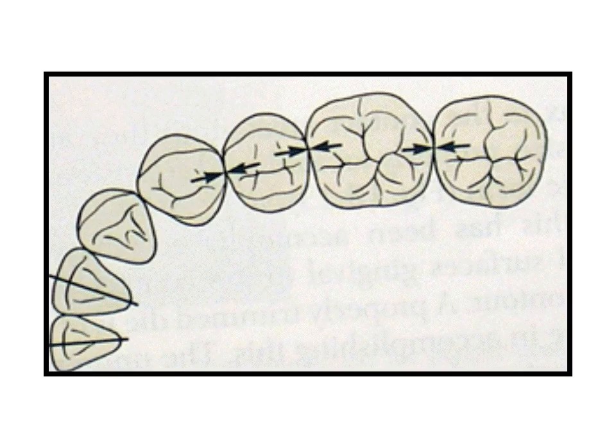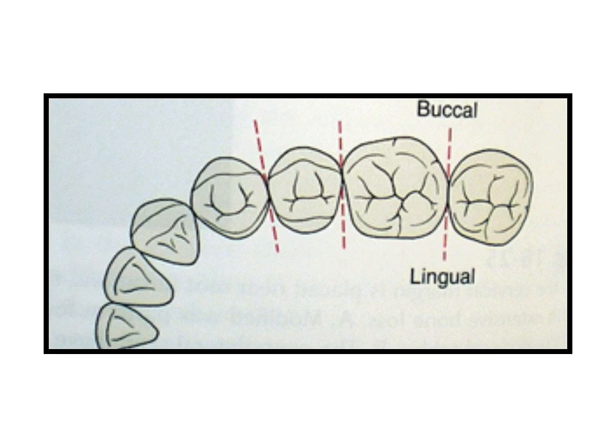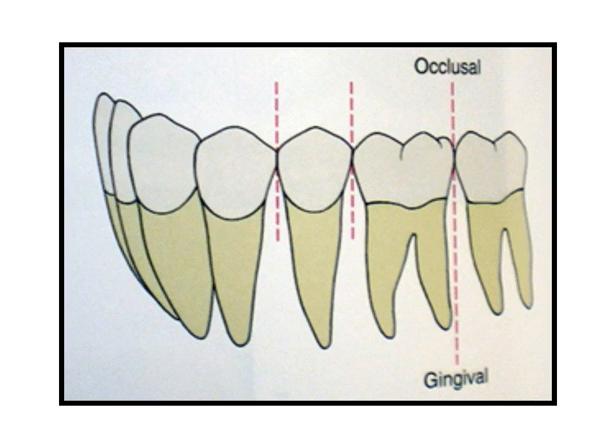Location of mandibular proximal contacts as seen from the occlusal view — note how the location progressively changes. Buccal-lingual embrasures are symmetrical about a line drawn through the contact. Occlusal-gingival embrasures are symmetrical about a line drawn through the contact. Establishing the correct embrasure form is essential for effective hygienic procedures.